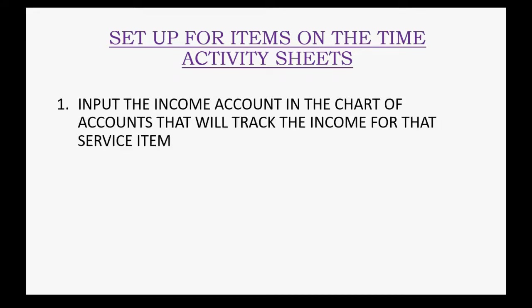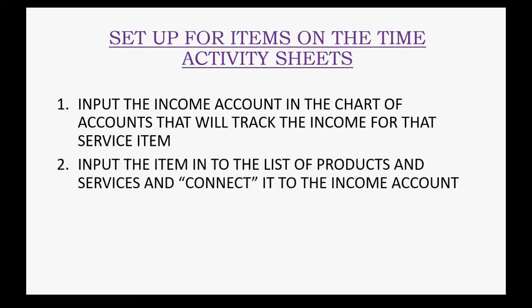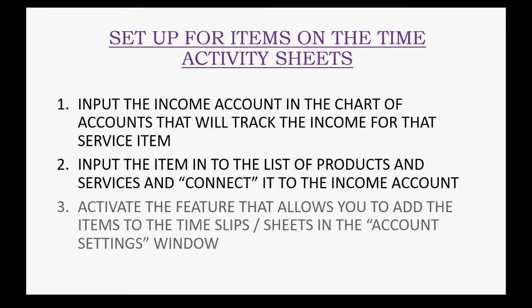Setting up for service items on time activity sheets is as easy as 1, 2, 3. First, we must input the income account into the chart of accounts that will track the income for that service item. Then, we must input the item into the list of products and services and connect it to the income account that we just created in step number 1. Then, all we have to do is activate the feature that allows you to add the items to the time slips or timesheets in the account settings window.